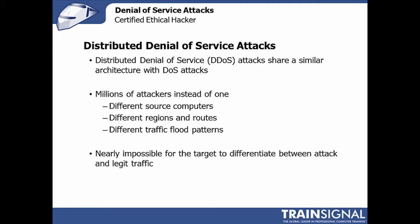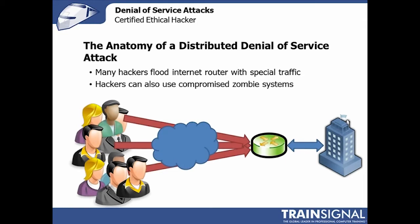The easiest way to explain that is to illustrate it. Consider 100 hackers planted around the world, or even around the country or city where the target is. If they all start mounting an attack at the same time, that's 100 sources, 100 computers pumping out attack traffic — 100 different things that the router needs to defend against, identify, and block.